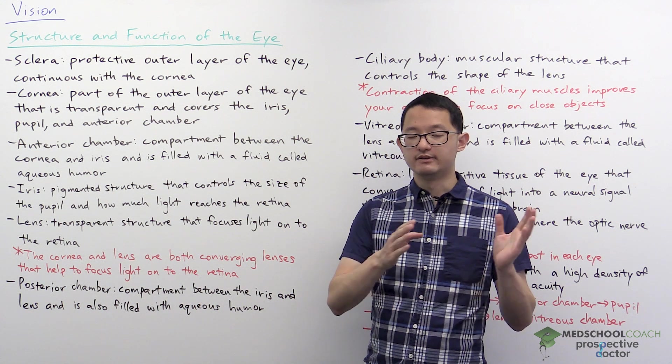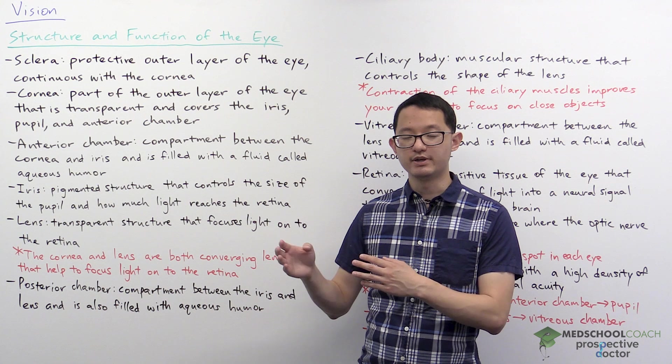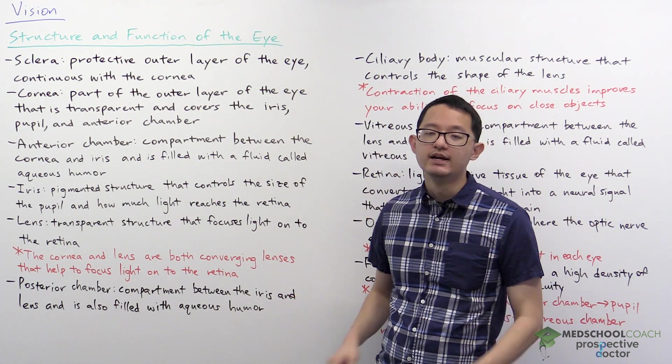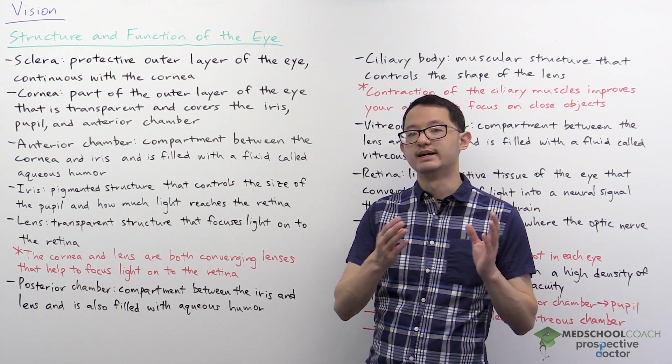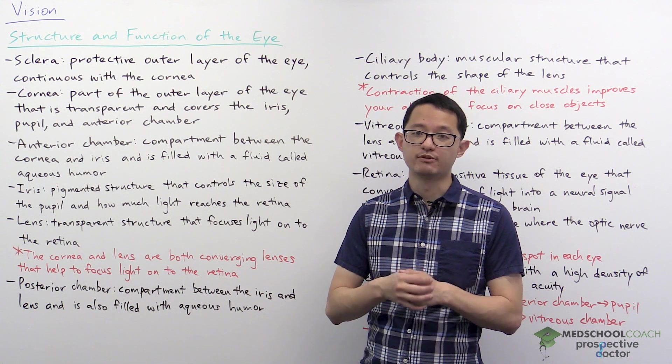So light passes through the cornea, it goes through the anterior chamber, it passes through the pupil, and from there it's going to reach the posterior chamber. The posterior chamber is the compartment between the iris and the lens, and it's also filled with aqueous humor.